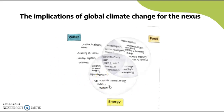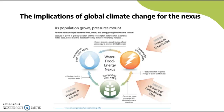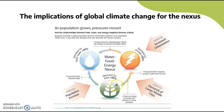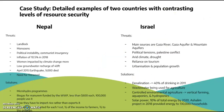As population grows, pressures mount and the relationship between food, water, and energy becomes critical — driven by global population growth and the consumption patterns of an expanding middle class. In less than two decades, three key demands will sharply increase. Demands of a larger middle class, urbanization, and population growth are all increasing demand for food, fresh water, and energy. Food production requires energy to plant and harvest crops; crops are being converted into biofuels; and energy-intensive desalination uses energy to produce drinkable water — all very much interlinked.